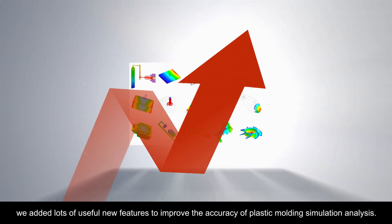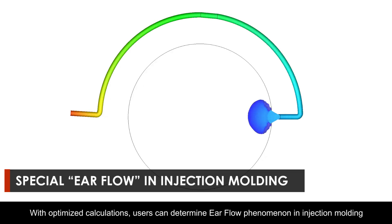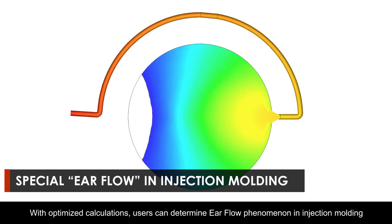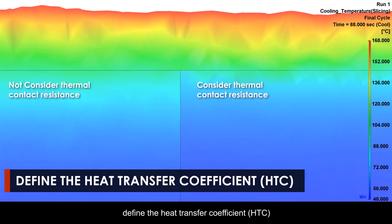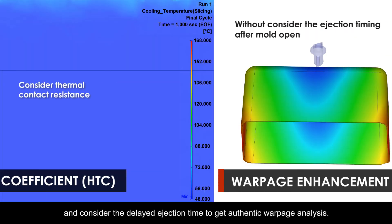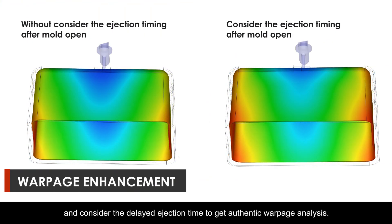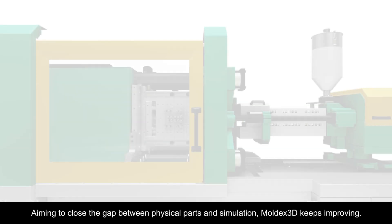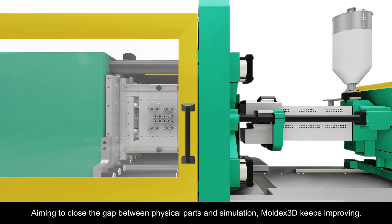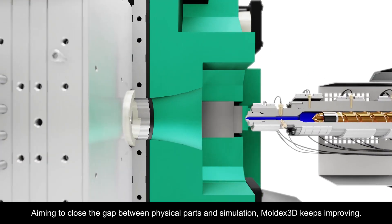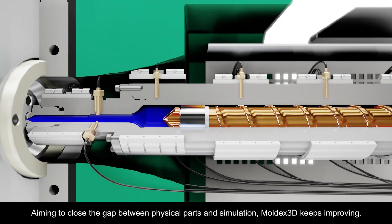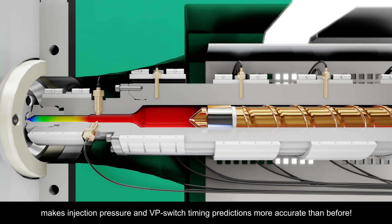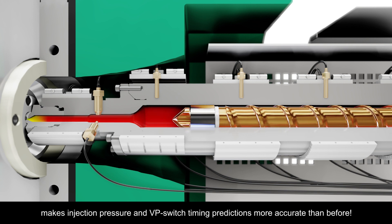With optimized calculations, users can determine airflow phenomena in injection molding, define the heat transfer coefficient (HTC), and consider the delayed injection time to get authentic warpage analysis — aiming to close the gap between physical parts and simulation.